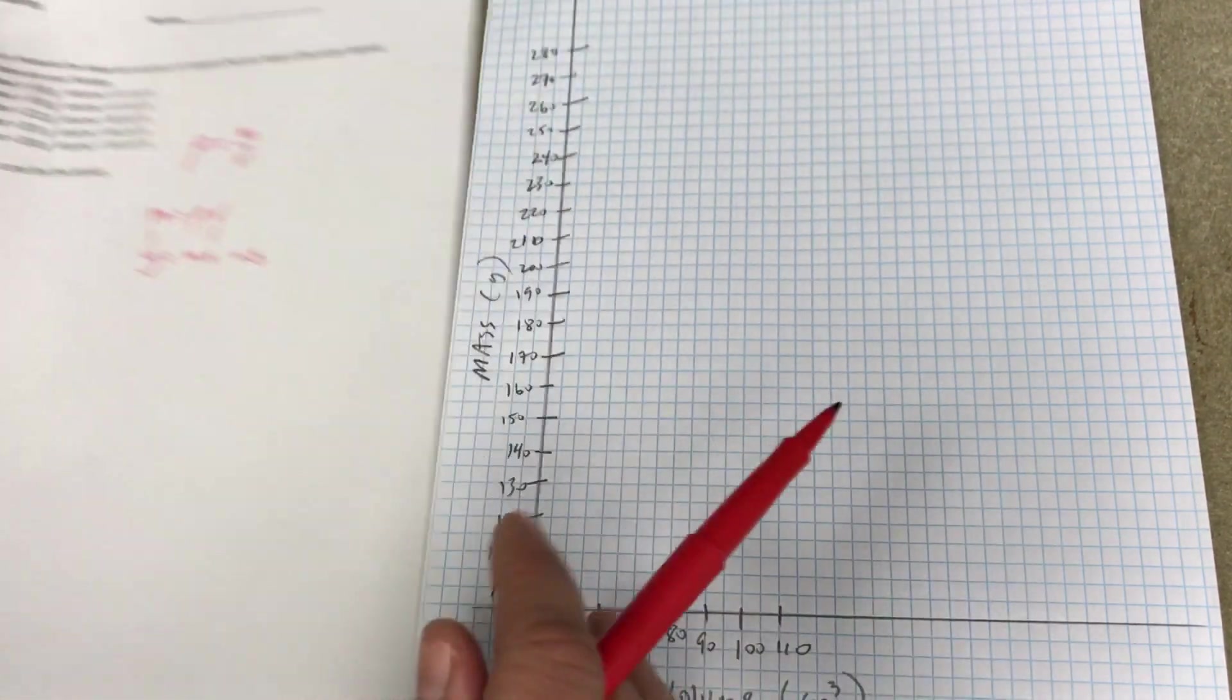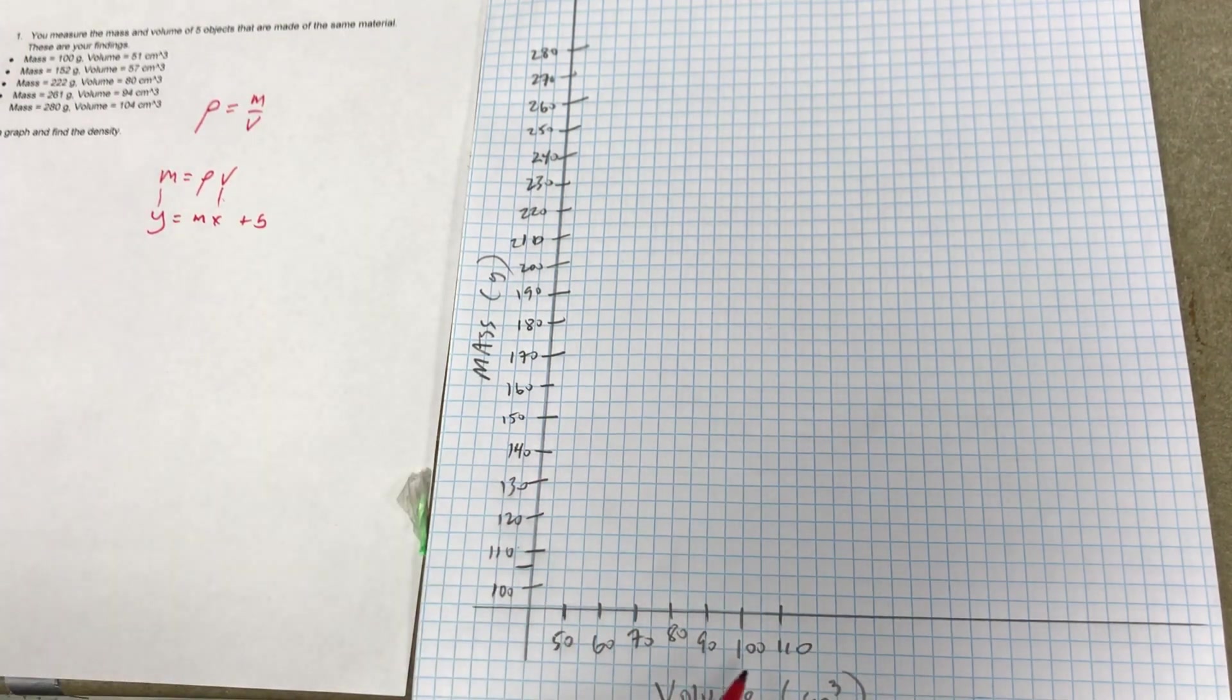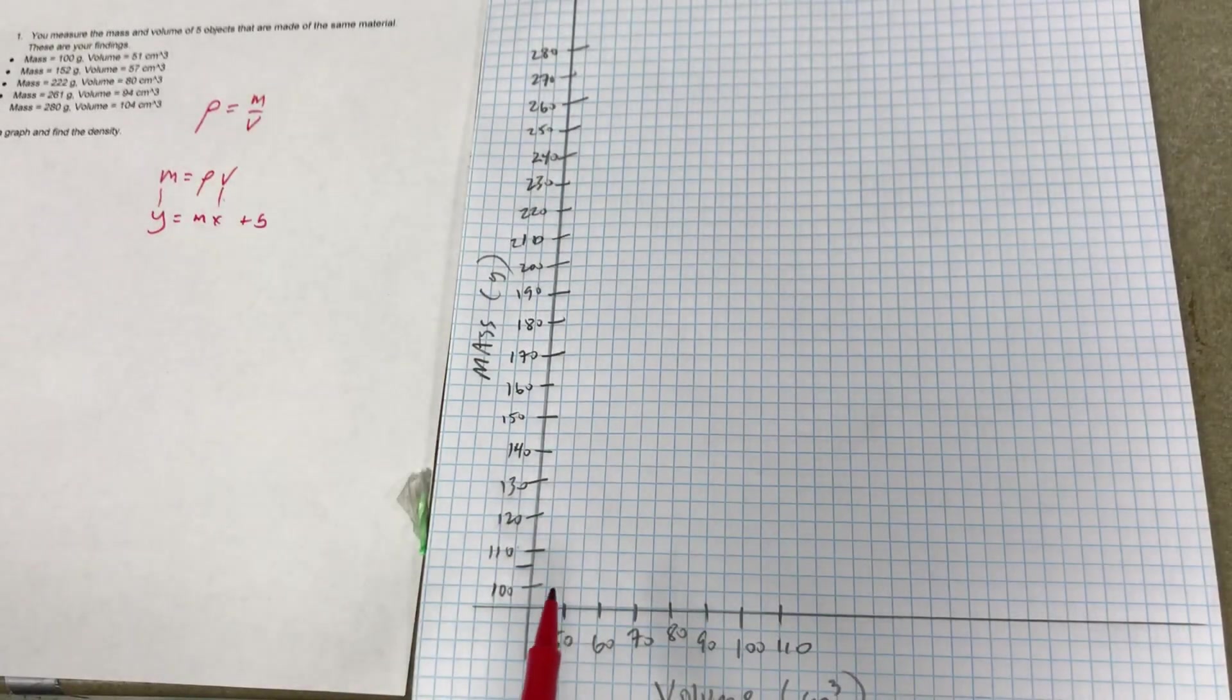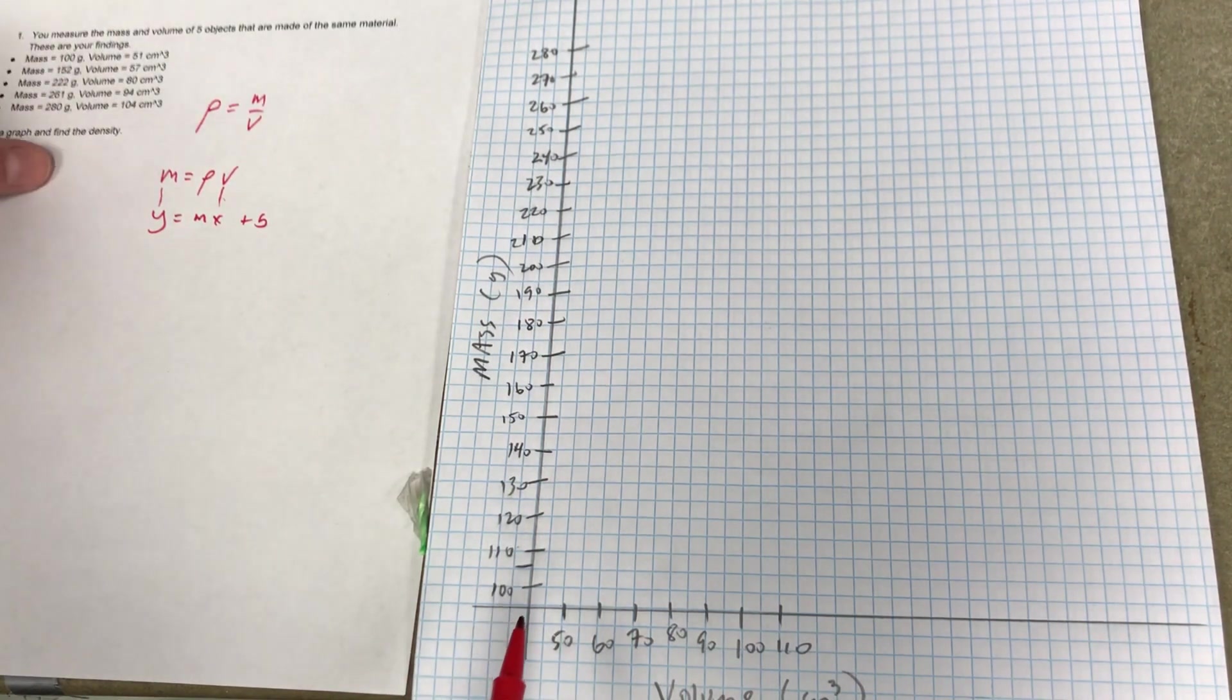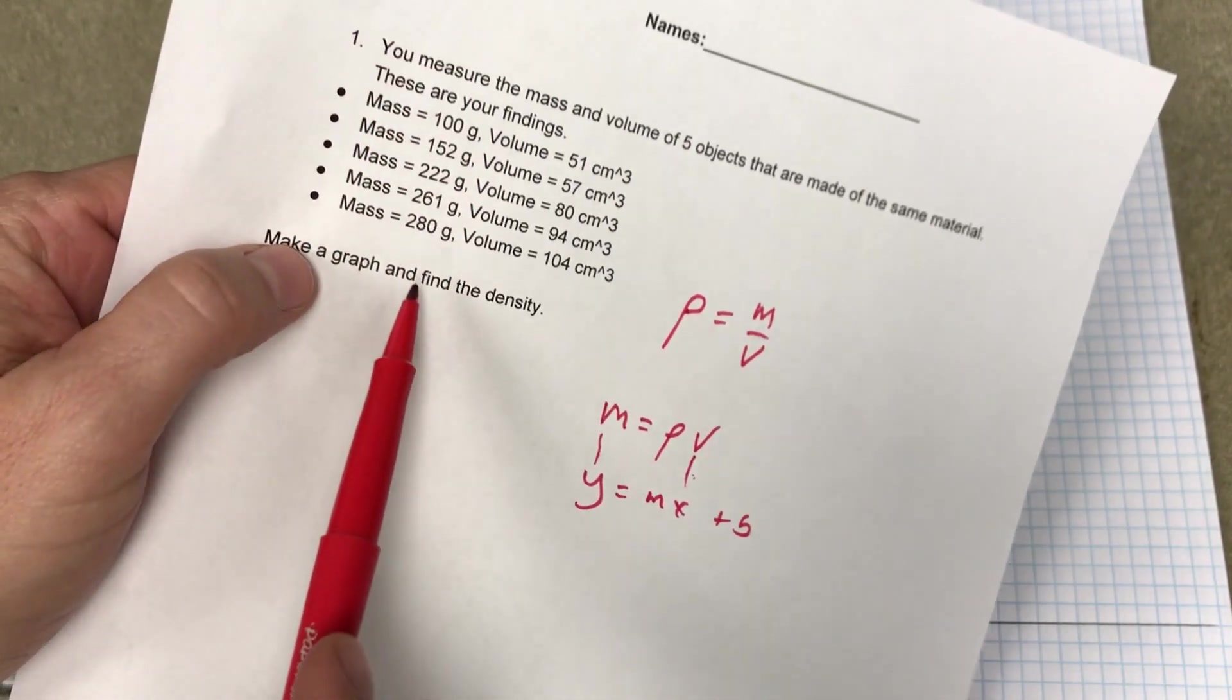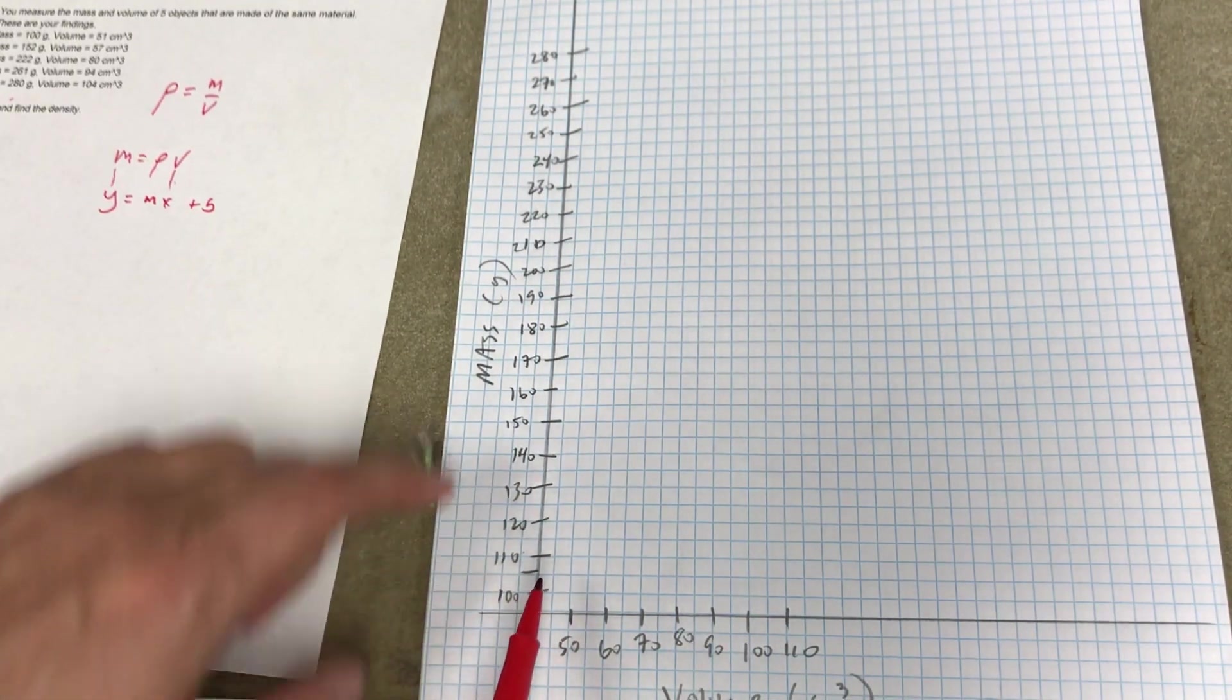Okay, so here are my values. So I have a piece of graph paper. However, I've made x and y-axis. I've already labeled them. Now, when I do this, I know that I have masses from 100 to 280 grams. And the units aren't super important right now.